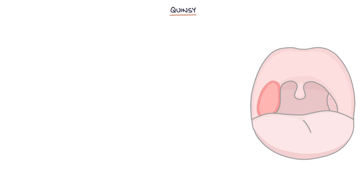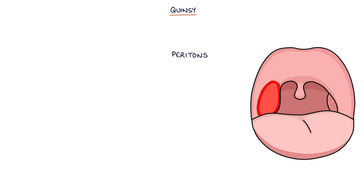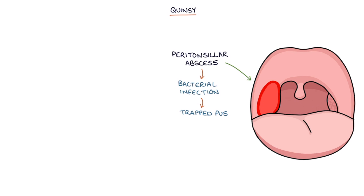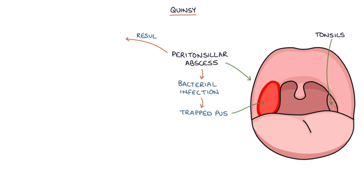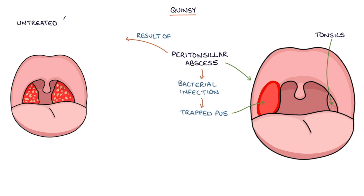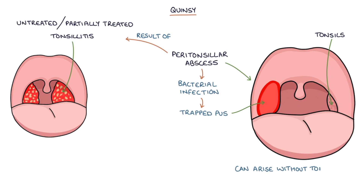Quincy is the common name for a peritonsillar abscess. A peritonsillar abscess arises when there is a bacterial infection with trapped pus, which forms an abscess in the region of the tonsils. It is a complication of untreated or partially treated tonsillitis or inflammation of the tonsils, although it can arise without tonsillitis.